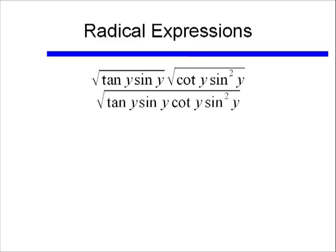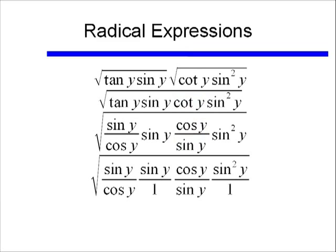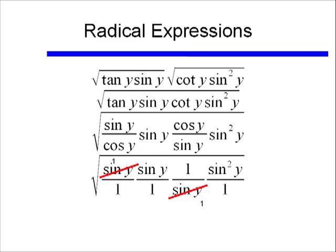Alright the next thing I want to do is change those tangents and cotangents into sines and cosines. I get sine y over cosine y times sine y, and cosine y over sine y times sine squared. Alright, again I'm going to do my little trick of turning everything into a fraction, and see if there's anything I can reduce out of here. Yes, I can divide out a cosine y out of my numerator and denominator, and I can divide out a sine y out of my numerator and denominator.